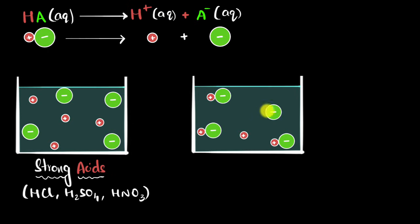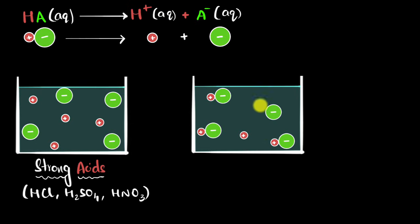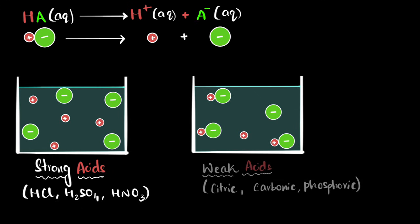But what's happening in case two? Here also I have four HA acidic molecules, but only one of them has dissociated — in other words, partial dissociation. Whenever acids undergo partial dissociation, we call them weak acids. Your citric acid, carbonic acid, phosphoric acid — they're all weak acids. And by the way, these are the acids that you find in your soft drinks.